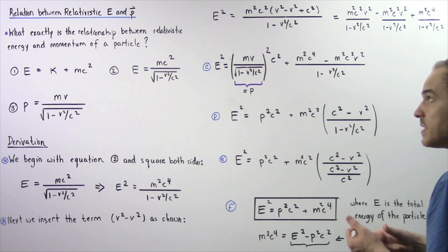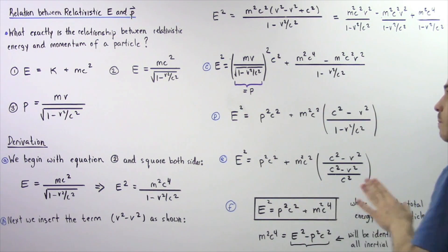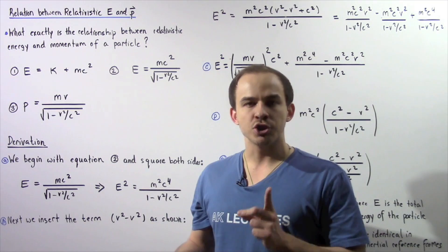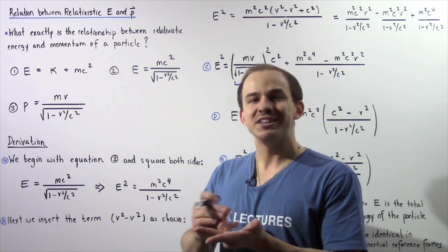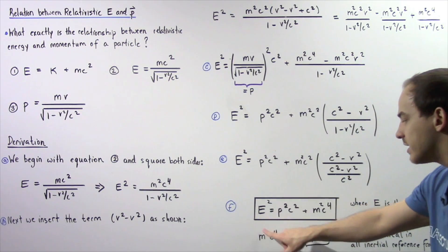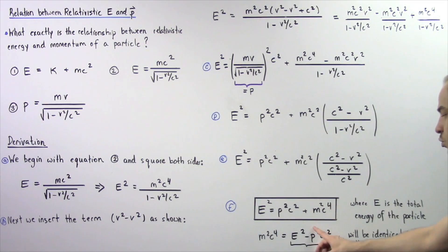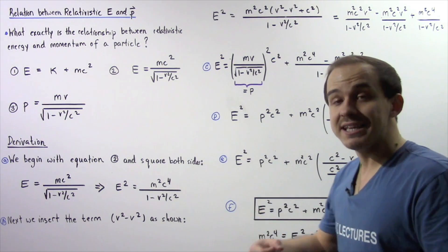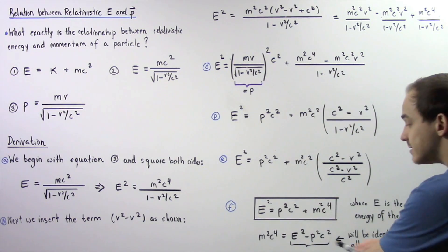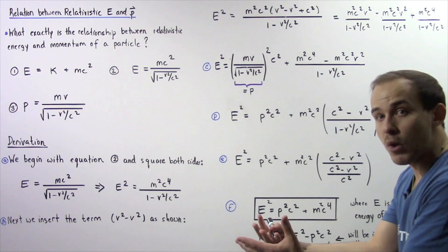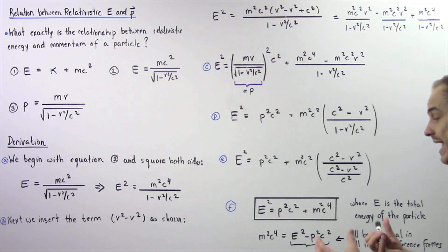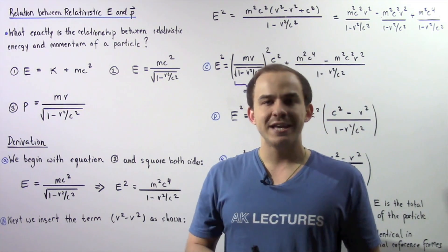We have built a relationship between relativistic energy and relativistic momentum. While relativistic momentum and relativistic energy change when we change inertial reference frames, mass and the constant c do not change. Rearranging this equation, m squared times c to the fourth equals E squared minus p squared times c squared. Since the left side doesn't change when we change inertial reference frames, E squared minus p squared c squared is a quantity that remains constant across inertial reference frames.